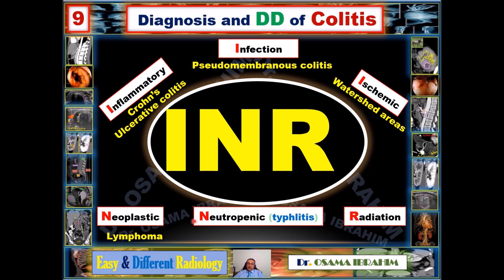Neoplastic causes include lymphoma, metastasis, and adenocarcinoma, all of which can cause wall thickening. Lymphoma in particular can produce the characteristic haustral thickening that appears as thumb printing on imaging. These neoplastic causes can enter the differential diagnosis, though they are less commonly the cause than the inflammatory, infectious, and ischemic categories.